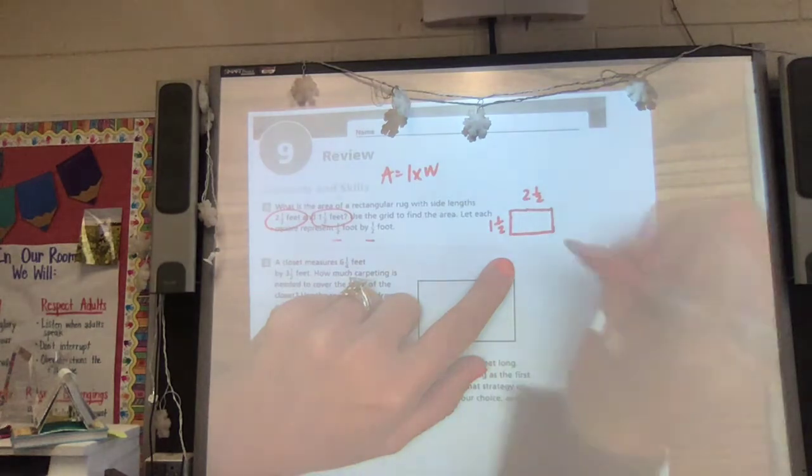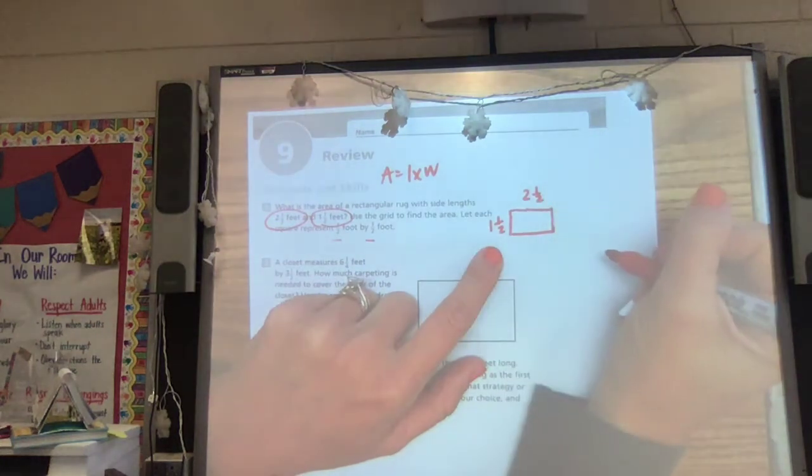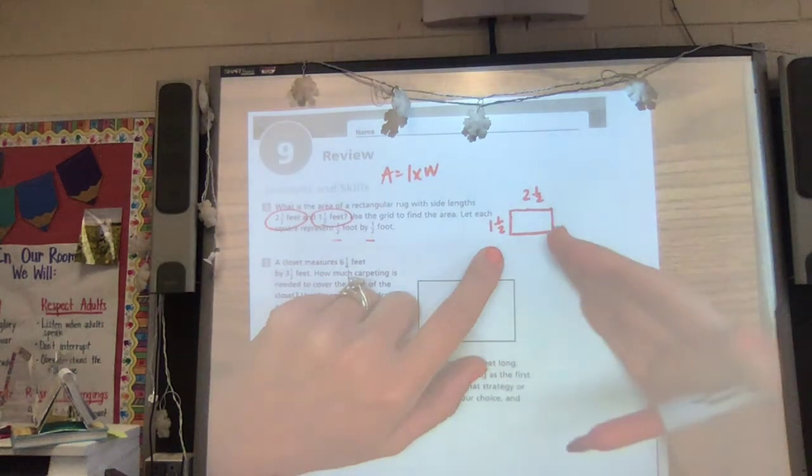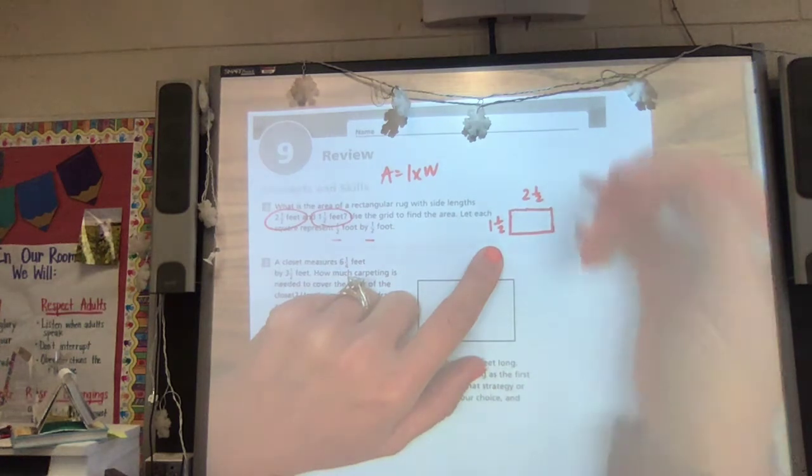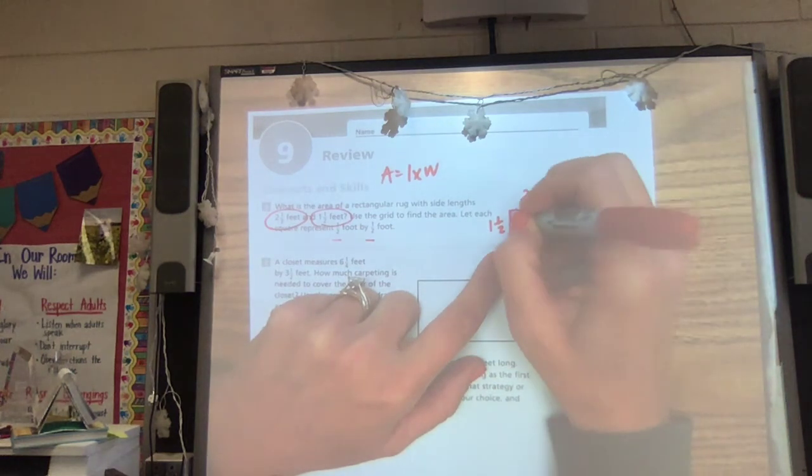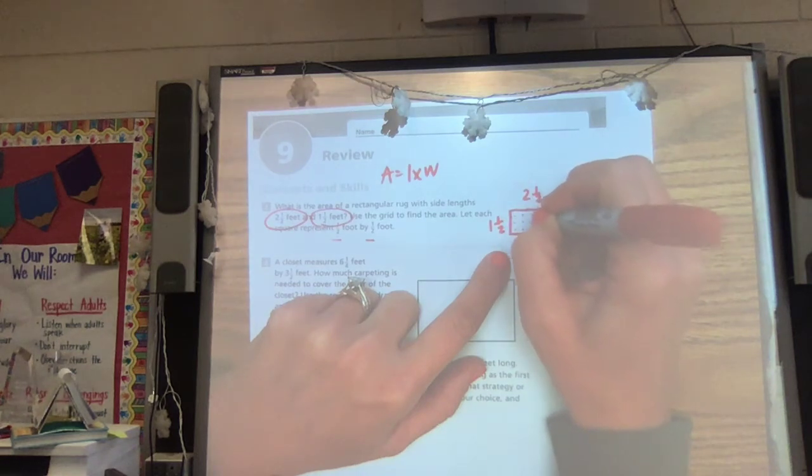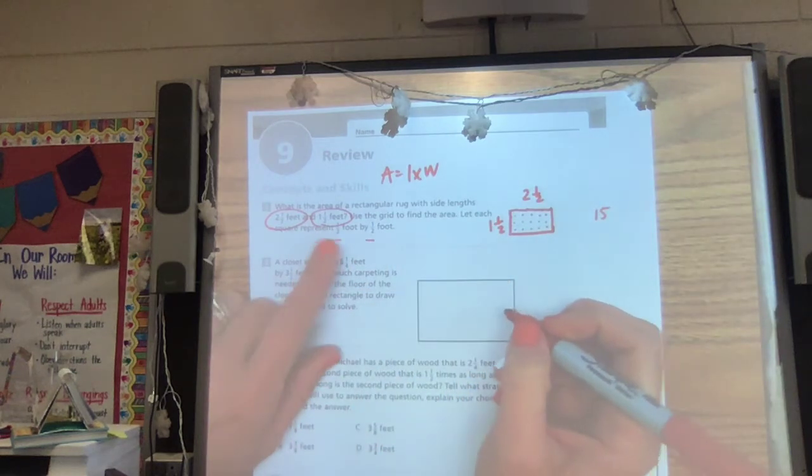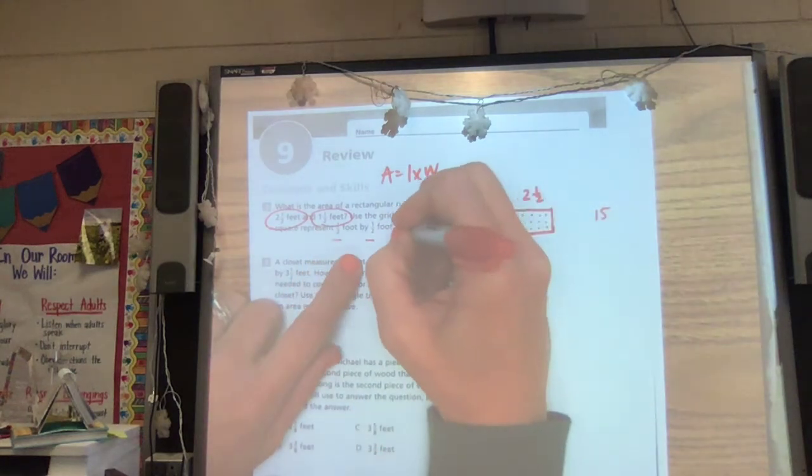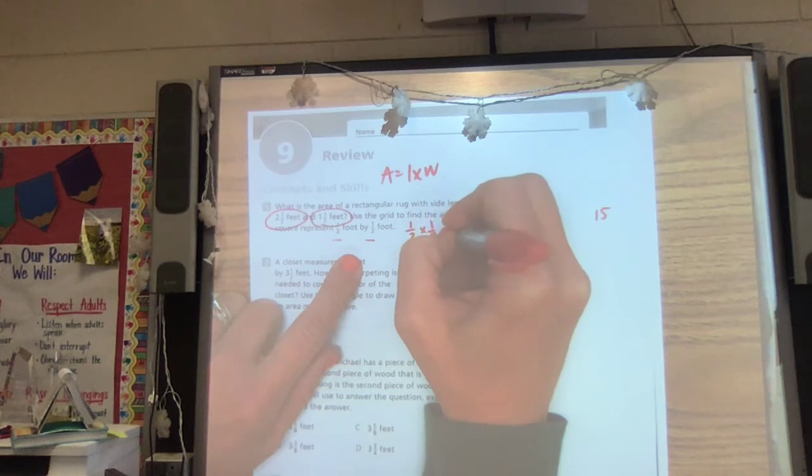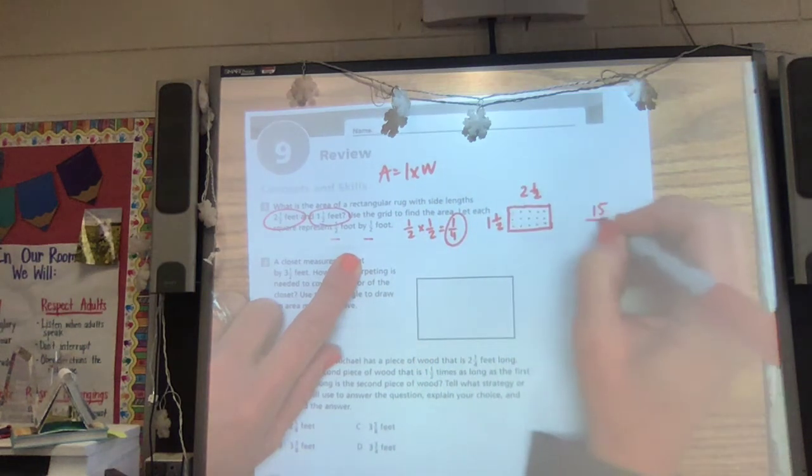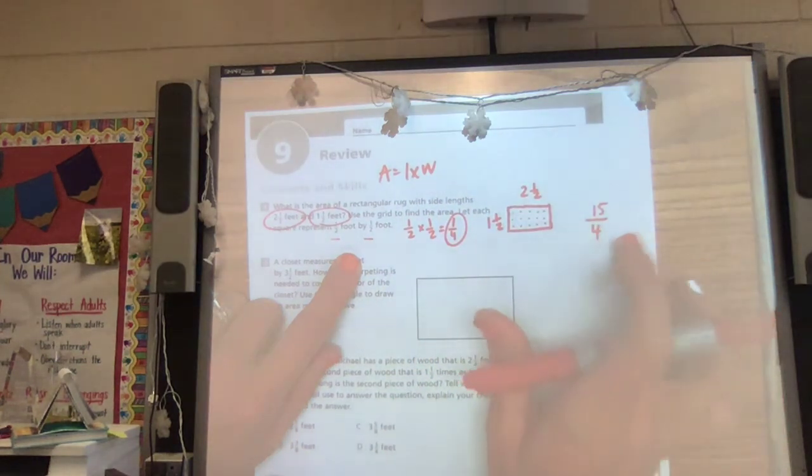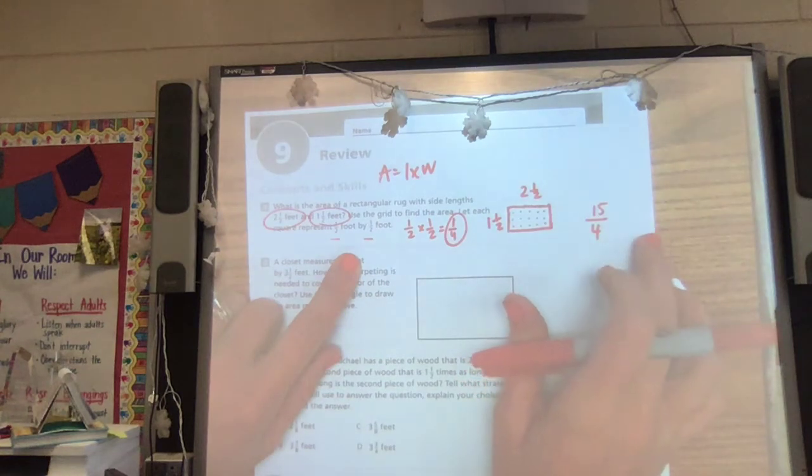So we can always, if drawing these pictures is confusing to you, you can always solve it and then see if you can find a picture that matches. But we can also look here and count these squares. 1, 2, 3, 4, 5, 6, 7, 8, 9, 10, 11, 12, 13, 14, 15. There's 15, but the thing that can be confusing is you've got a half times a half, which means all of those are fourths. So this is 15 fourths. That's the part that gets a little confusing when you draw it.